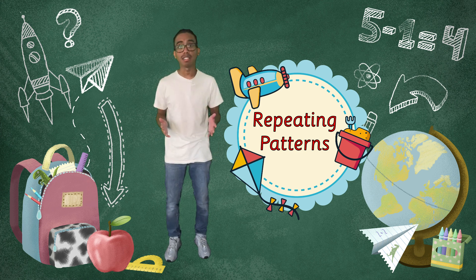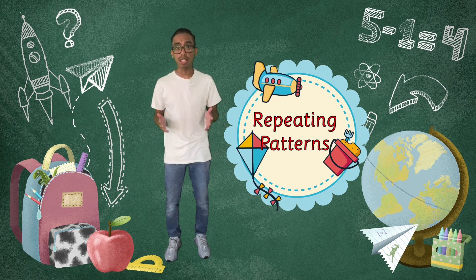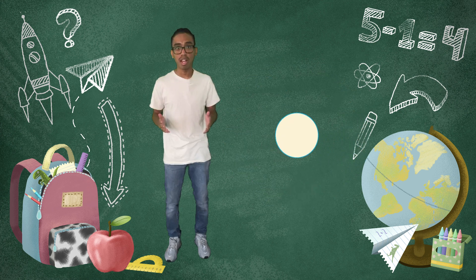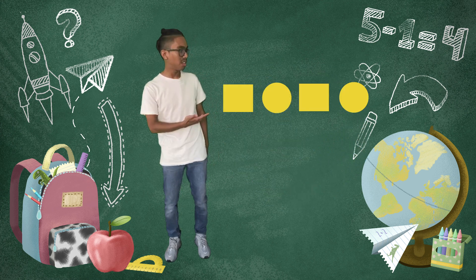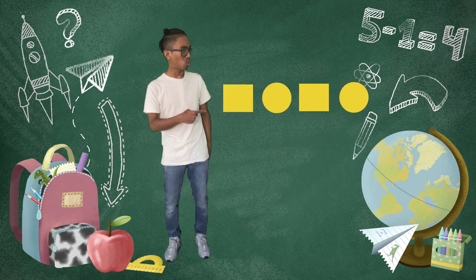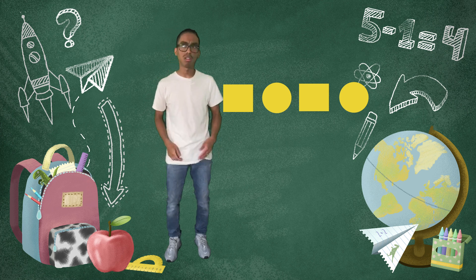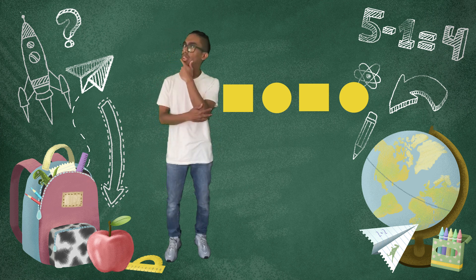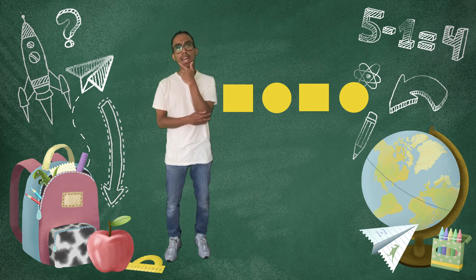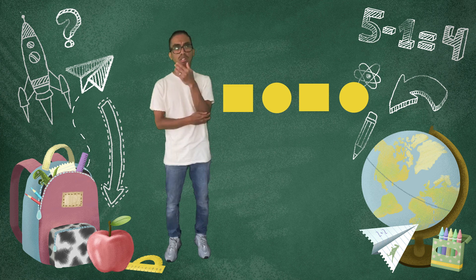It's a pattern that repeats itself, and here is a pattern. It goes square, circle, square, circle. I wonder what shape will come next. Do you think you know?